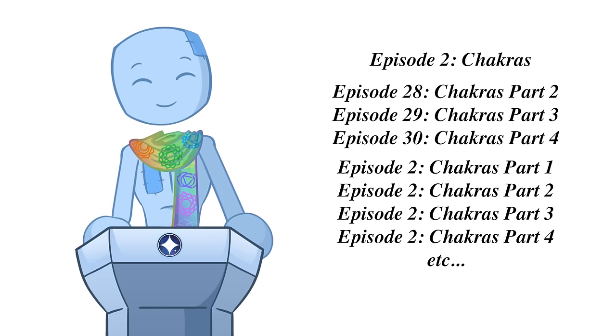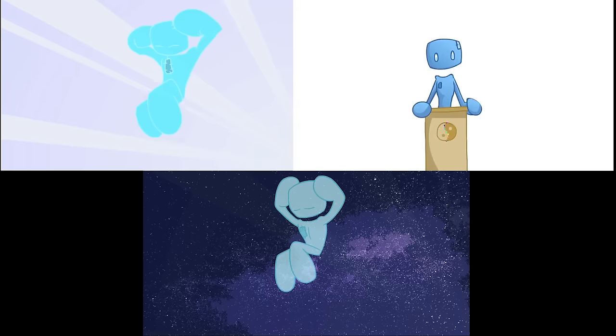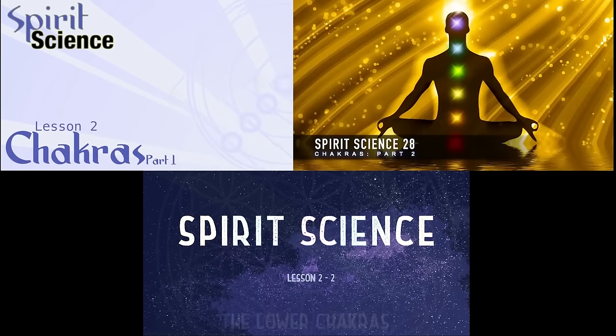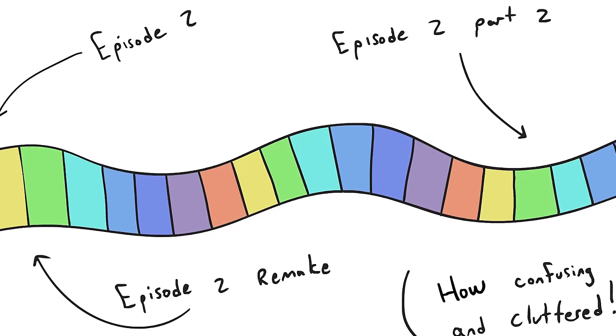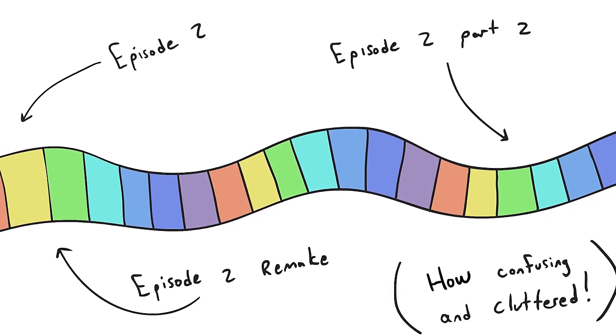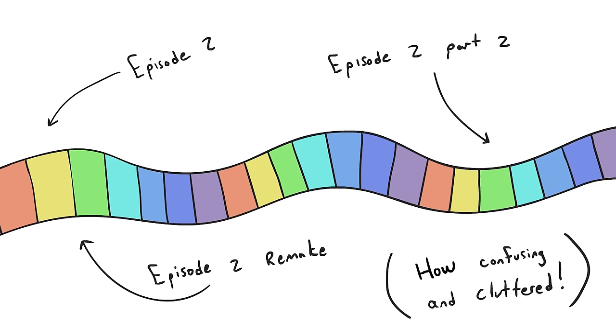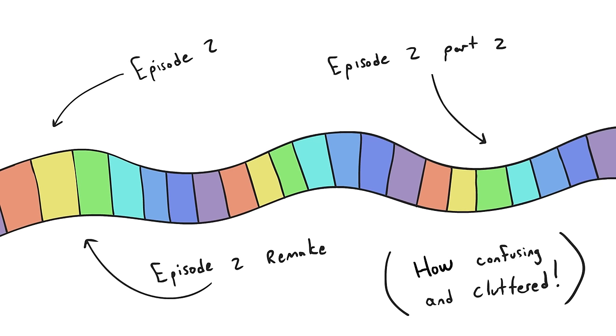The big challenge with this is that in the attempt to having continuity through the actual lessons of Spirit Science, it naturally causes confusion when there are parts of particular episodes made and then remade with different numbers scattered throughout the timeline. And this isn't the only place that something like this has happened.